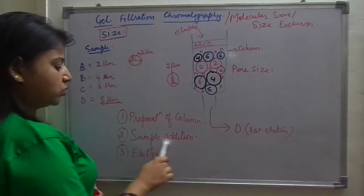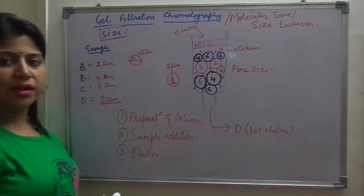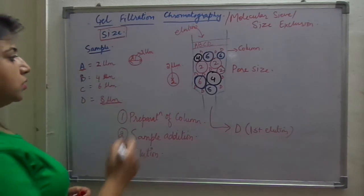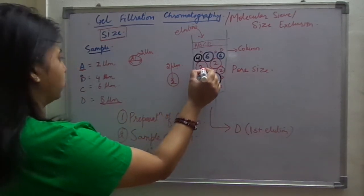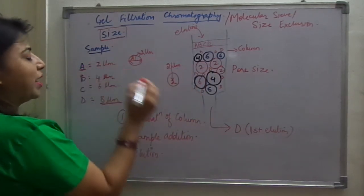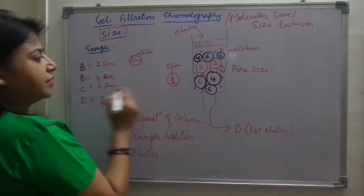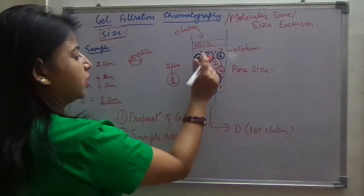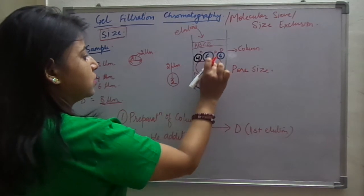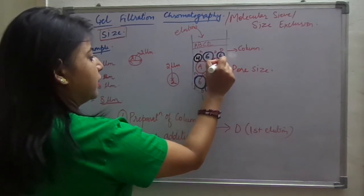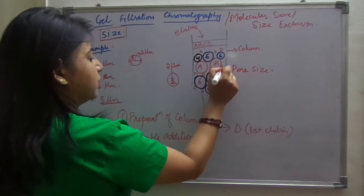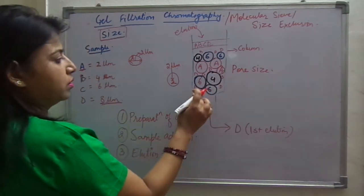Now, again I am moving to the second part first of all, that is sample addition. This two, in this two micrometre beads, A will be added, but B, C and D won't be able to go through. So, here now I am removing this and I am writing A, A comes over here and A can come over here.